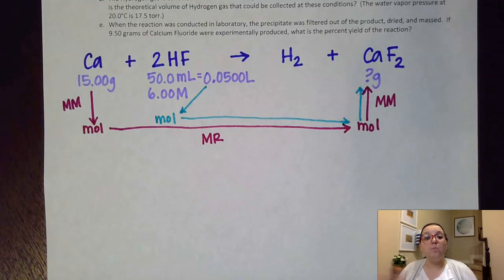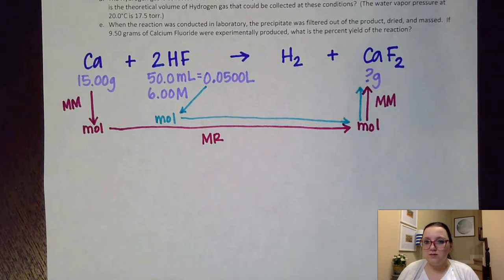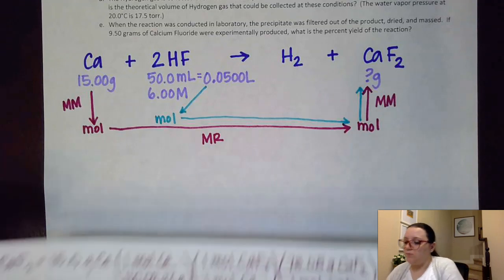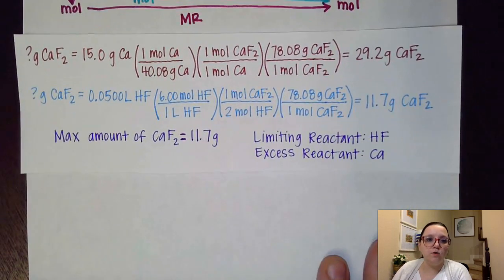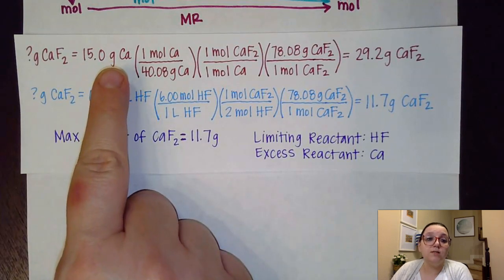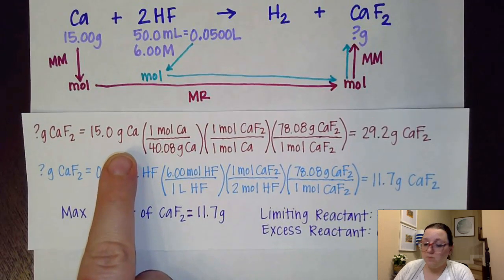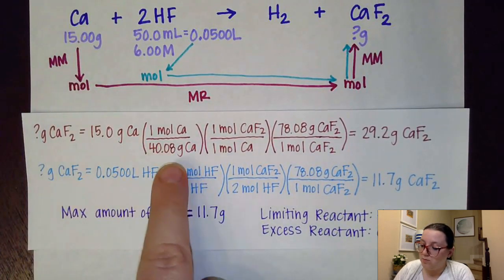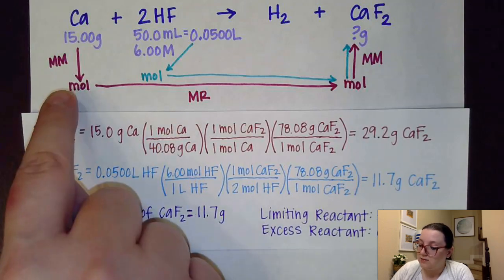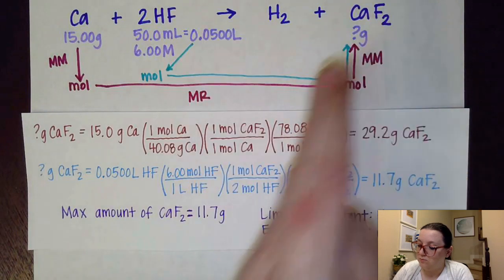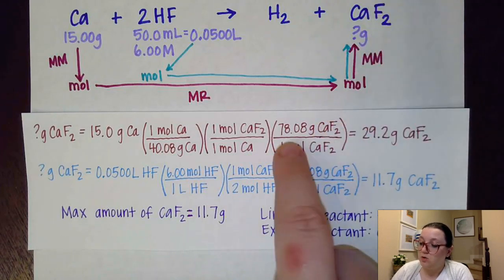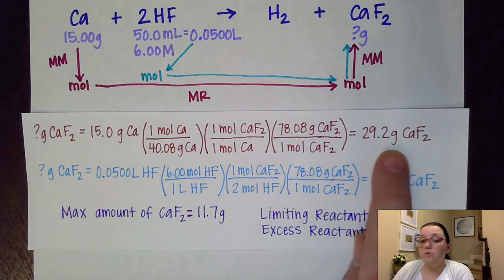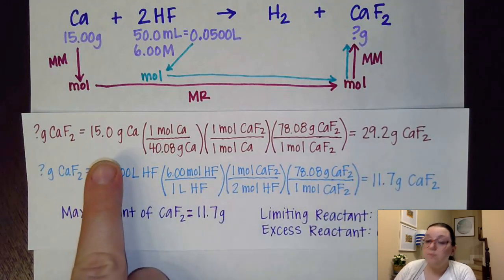Now that I've written out both maps, I'll show my calculations. Hopefully you could calculate these yourself from the maps. For the calcium path, I start with 15 grams of calcium. First I use the molar mass of calcium to convert to moles of calcium, then I set up a mole-to-mole ratio between calcium and calcium fluoride — that's one to one because both have coefficients of one — and then I go moles back to grams of calcium fluoride using its molar mass. That gives me 29.2 grams of calcium fluoride possible from the mass of calcium.